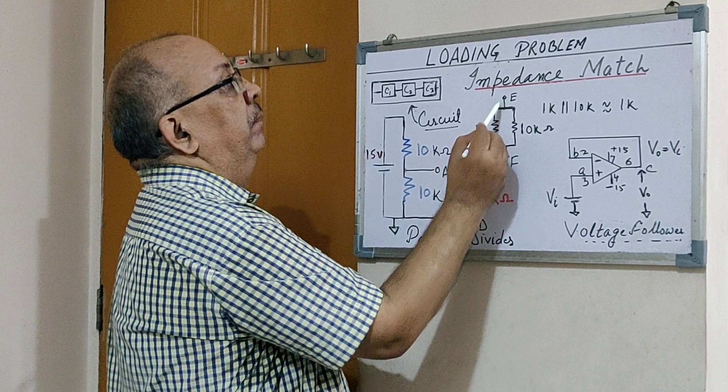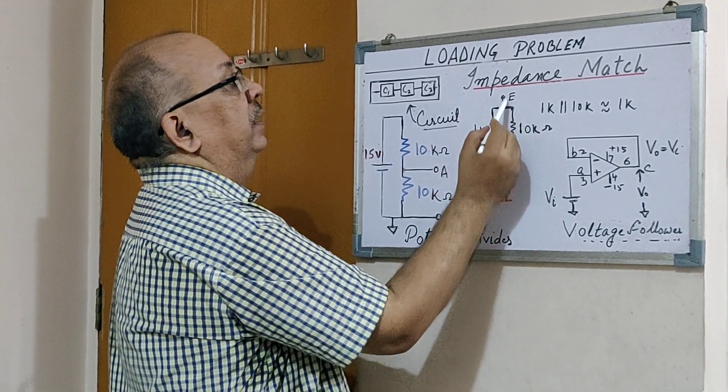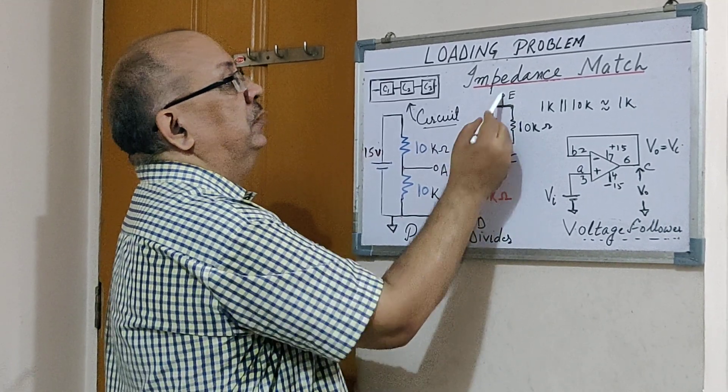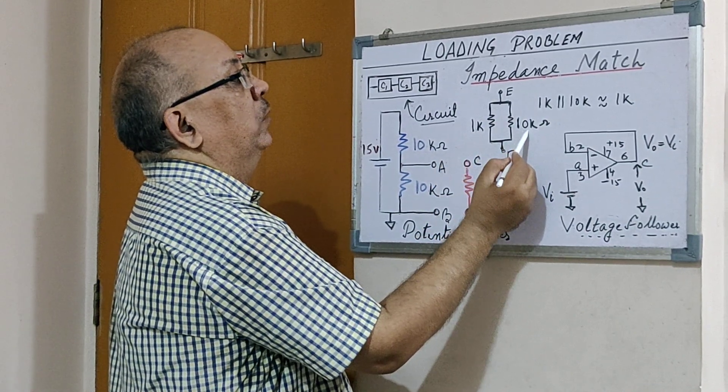take a very simple example. If there are two resistances, 1k and 10k, connected between points, and if you measure the value of these two in parallel combination, one being very low and the other being quite high, the total parallel combination is approximately 1k. That means whenever a small resistance is connected in parallel to a